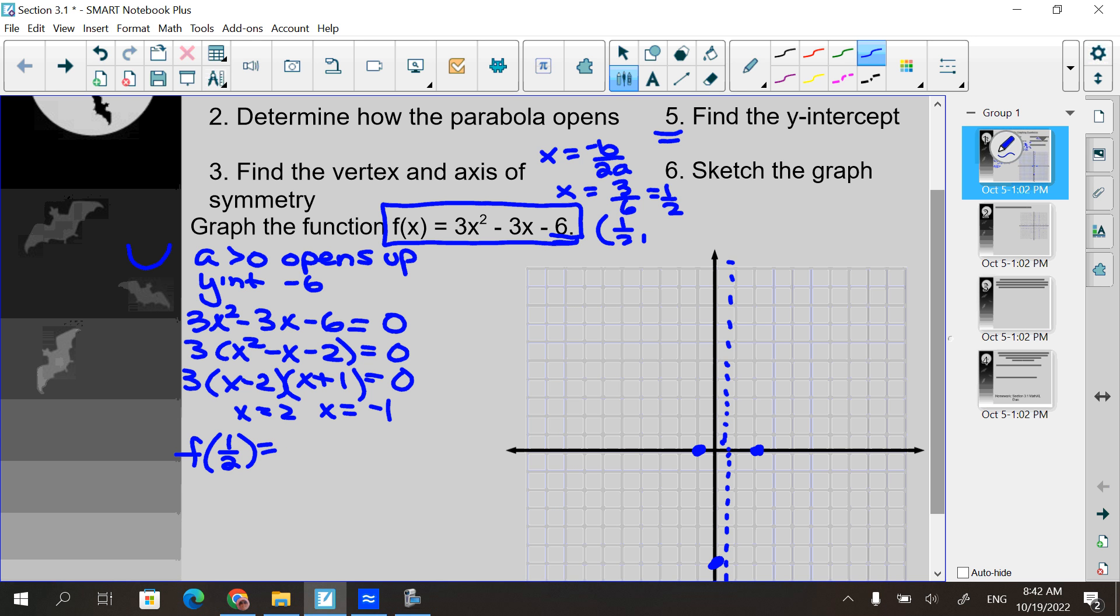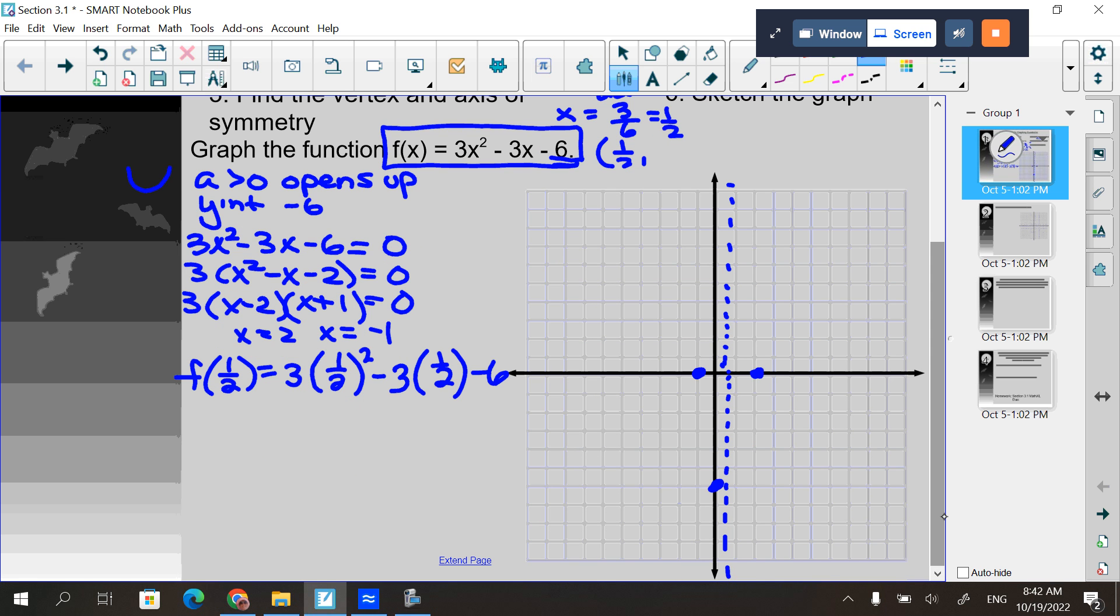I don't really have much room up there, so I'll do it down here. So I'm going to plug one half in. It's three times one half squared minus three times one half minus six. Now there are two of you. I know which two it is, but the question is, do you know which two it is? I have two of you that are distributing the three to this and then squaring it. That is against order of operations back from algebra one. You have to square this first, then multiply by the three. When you get your test back, you'll know because I wrote you a note on your test.